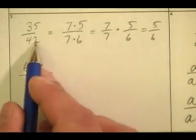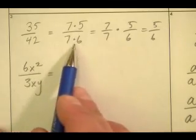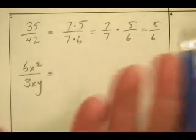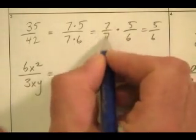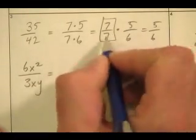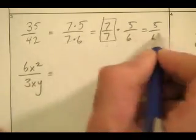We're looking at 35 over 42. 35 is the same thing as 7 times 5 over 7 times 6. We know how to reduce these things, but why can we reduce? Because of the property of quotients. I can write this as 7 over 7 times 5 over 6. What is 7 over 7? This number is 1. Therefore, this whole thing is 1 times 5 over 6, which is 5 over 6.